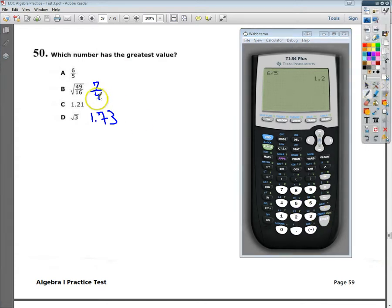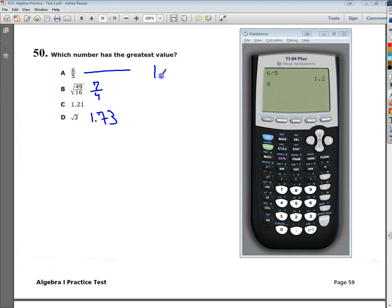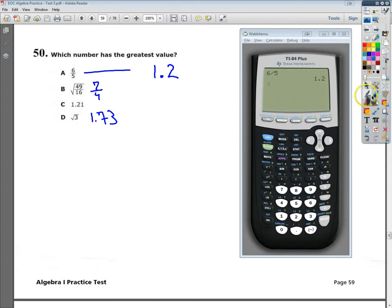So I have 1.2. And what I want to do is make a chart, not really a chart, but I want to make some sort of line where I line up all the decimal points. That's important.